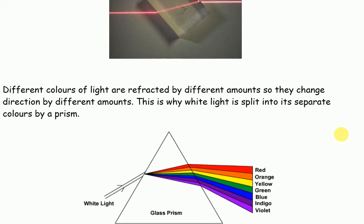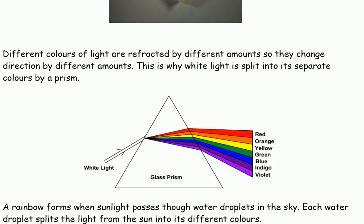Different colours of light are refracted by different amounts, so they change direction by different amounts. This is why white light is split into its separate colours by a prism.